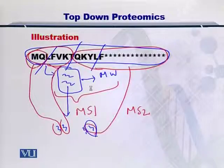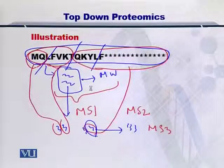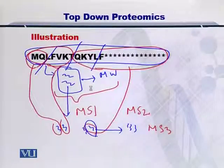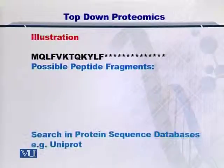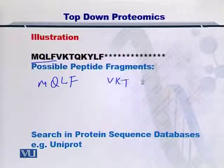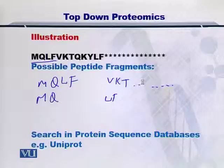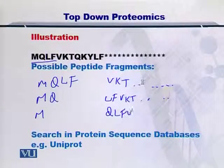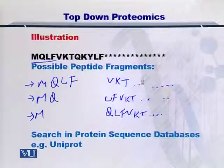If you take this peptide and fragment it further, then this is MS3. This process can continue until you arrive at a single amino acid in the peptide and measure its molecular weight as well. Once you have obtained all the possible fragments — which in this case would be MQ, LF, VKT, and so on — it is possible that you can have any fragment resulting from the fragmentation process.